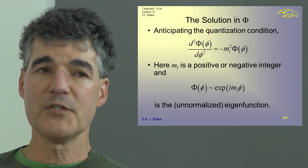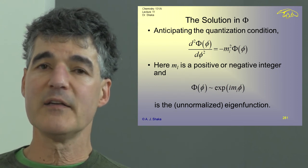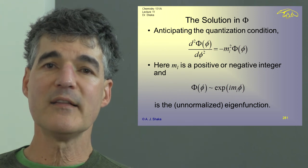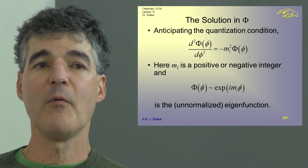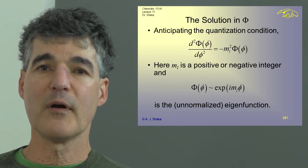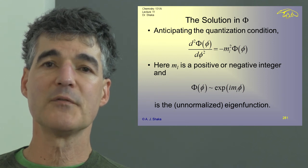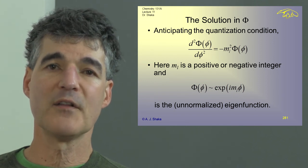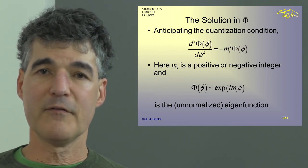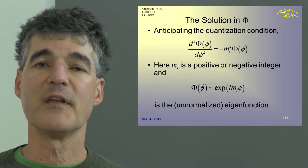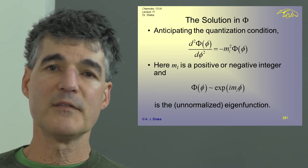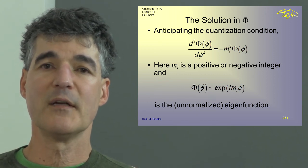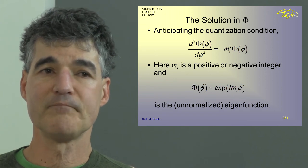Our solution is going to be E to the iM phi. I won't bother normalizing the eigenfunction because we'll normalize the whole eigenfunction over the entire sphere at the end. This is basically what we saw for the particle on a ring.